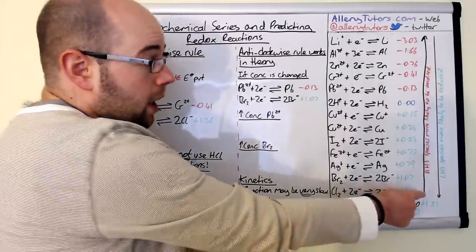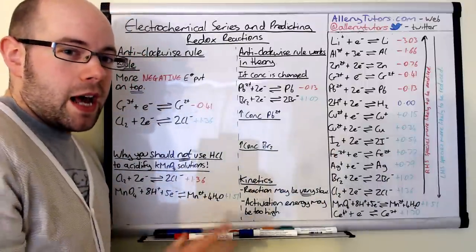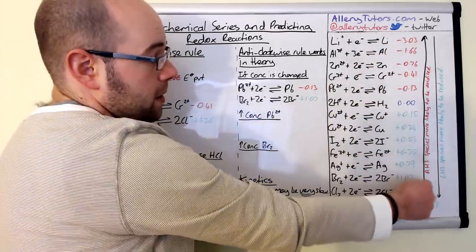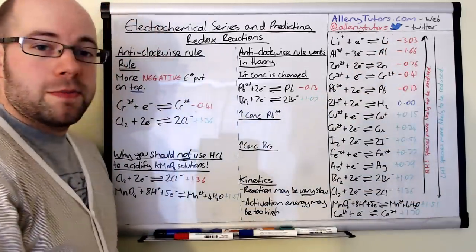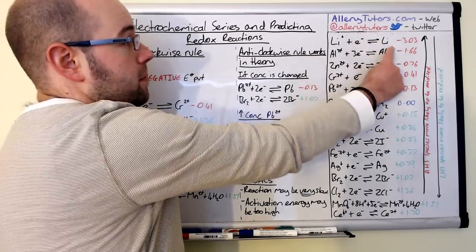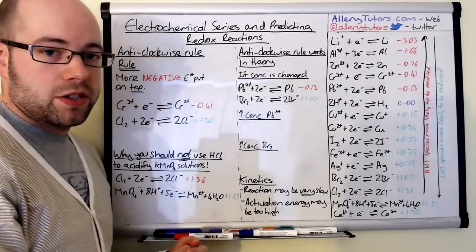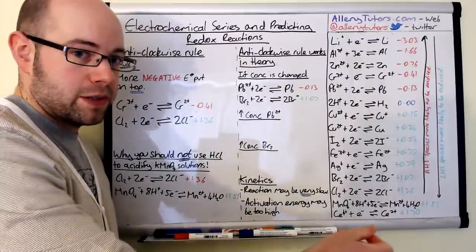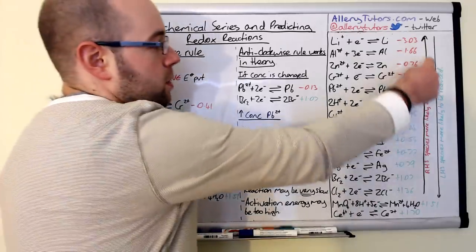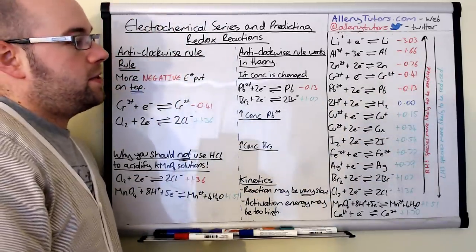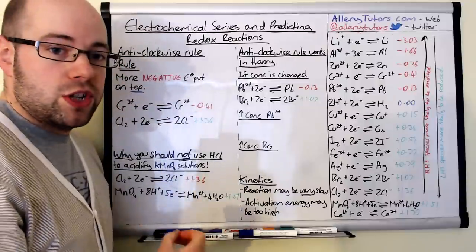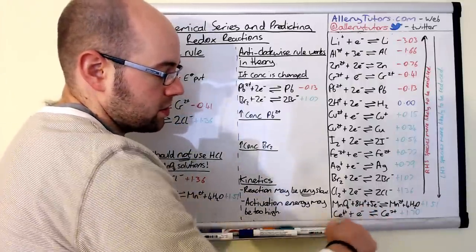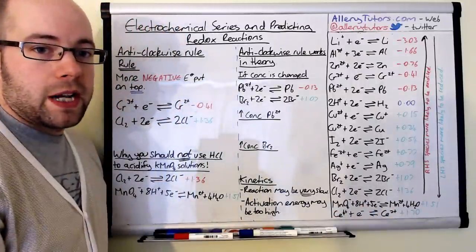I've written two arrows on here to explain what they mean in terms of redox and oxidation. If we go up the series, the right hand side species is more likely to be oxidized — so lithium on the right hand side is more likely to be oxidized, meaning we flip the equation: lithium produces Li+ plus an electron. As we go down the electrochemical series, the left hand side species is more likely to be reduced. So cerium 4+ is much more likely to be reduced because it has the most positive E0 value at the bottom.